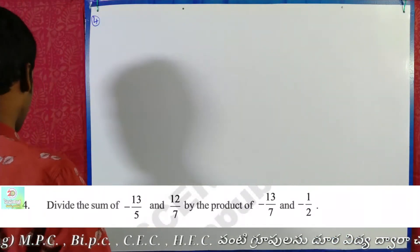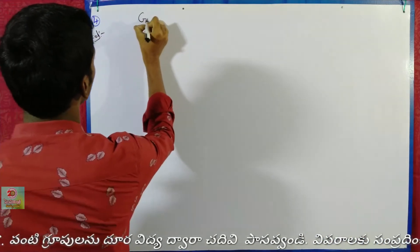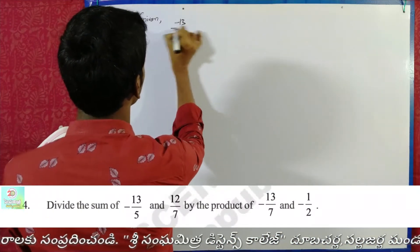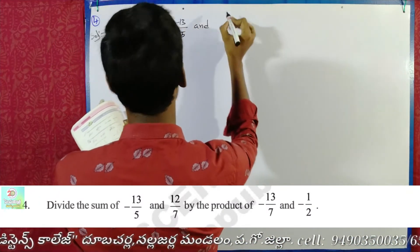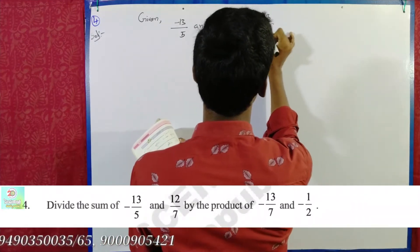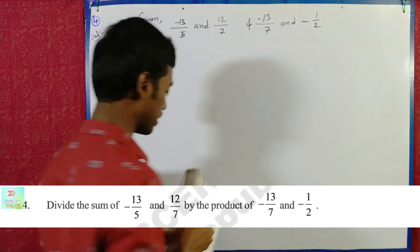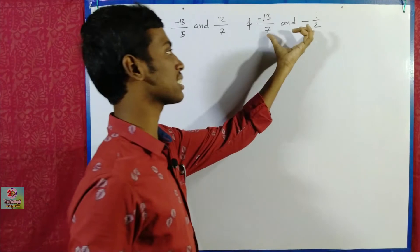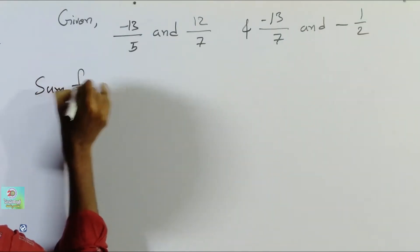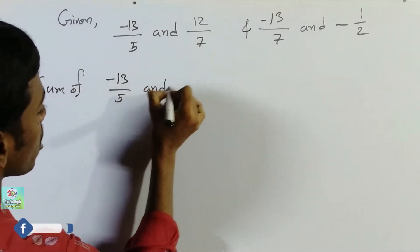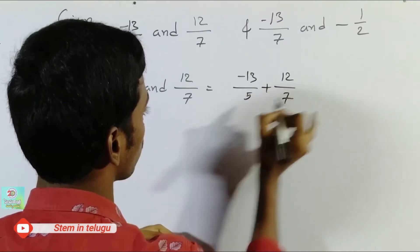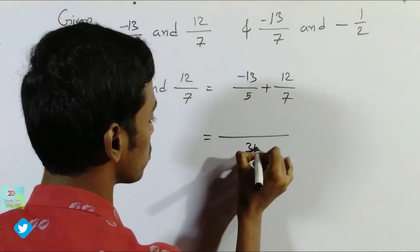First of all, we have to note this sum. Given: the sum equals minus 13 by 5 plus 12 by 7. The LCM of 5 and 7 is equal to 35.